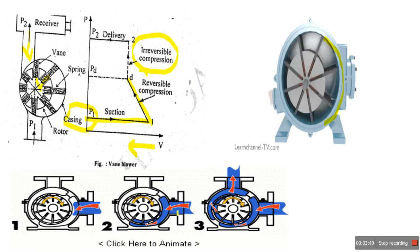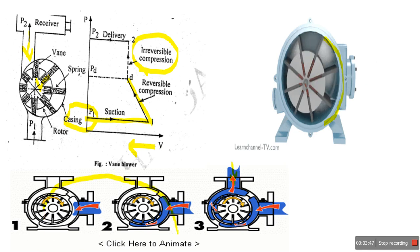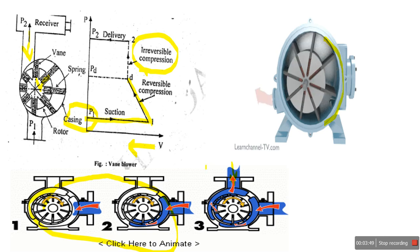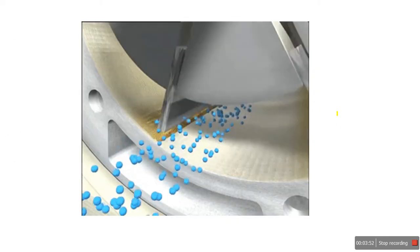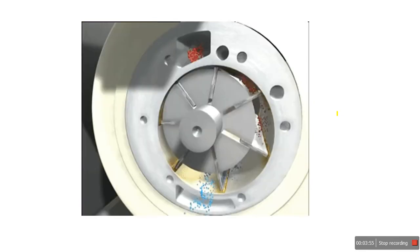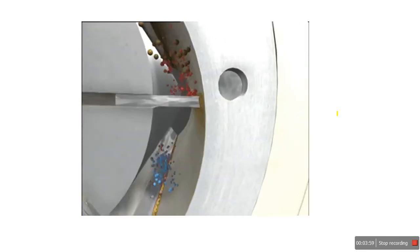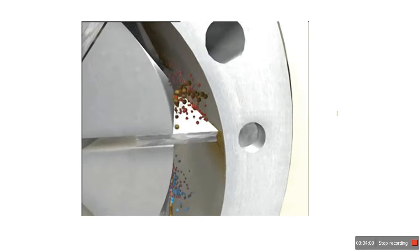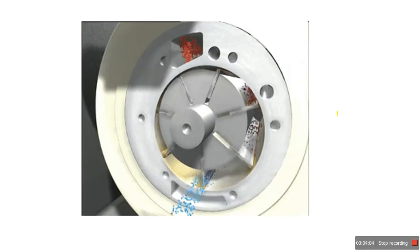Step by step: first the air is trapped, then in the second step it begins to compress, and in the third step the channel opens to the receiver for backflow. The first two stages involve volume reduction to compress the air. The animation also shows how the vanes reciprocate against the springs, how the rotor is located eccentrically, and how the compressed pockets turn red as compression proceeds.